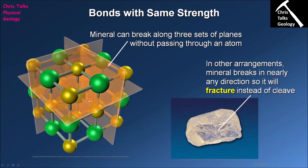The number of cleavage planes is variable depending on the mineral. Some minerals will have one cleavage plane, some will have two, three, four, five, or six. In some rare circumstances it can be even higher, but typically six is about as high as you can possibly go.